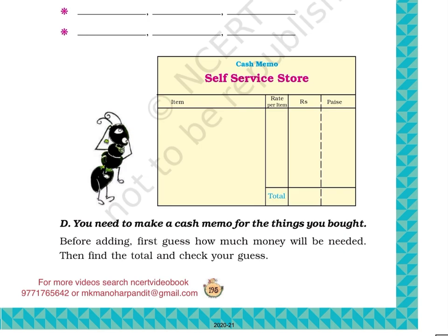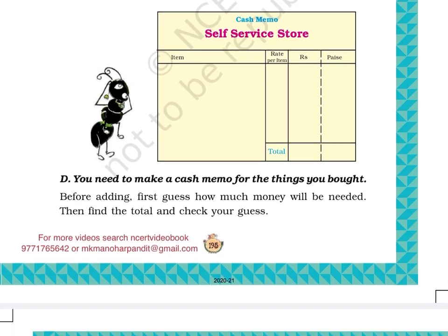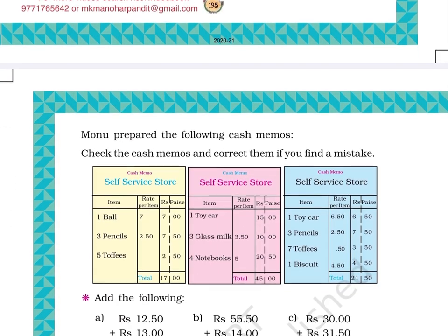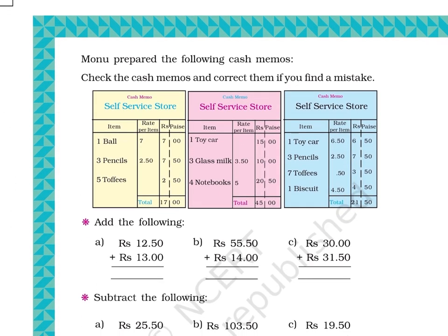Question D: You need to make a cash memo for the things you bought. Before adding, first guess how much money will be needed. Then find the total and check your guess. Page 196.